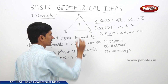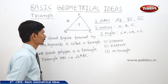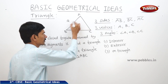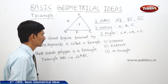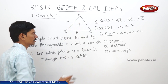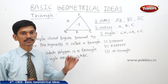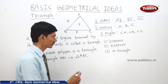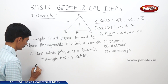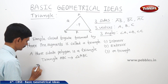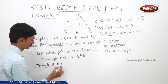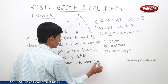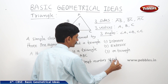If you take any point P, it is in the interior of the triangle. Point Q is in the exterior of the triangle, and point R is on the triangle. The vertices also lie on the triangle. A triangle is a polygon with the least number of sides — we cannot form any polygon with two sides.